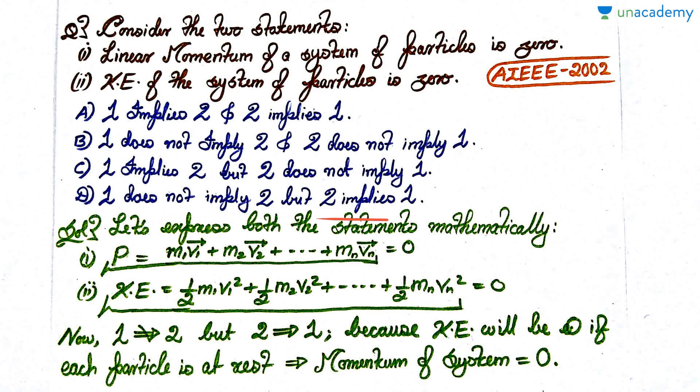Let's just write down everything we have been given mathematically. Write down the momentum: m₁v₁ + m₂v₂ plus all the way till mₙvₙ. Similarly kinetic energy is half m₁v₁² plus half m₂v₂², the summation of all these quantities. Both are given to be zero.